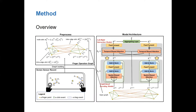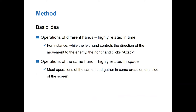We propose a transformer-style model which takes finger operations as inputs in a graph structure to incorporate the spatial and temporal relationships between both hands' operations. The underlying basic idea of our model is that operations of different hands are highly related in time. For instance, to approach and attack enemies, players always control the direction of movement with the left hand and click the attack button with the right hand at the same time. Operations of the same hand are highly related in space, since most operations of the same hand gather in scenarios on one side of the screen.